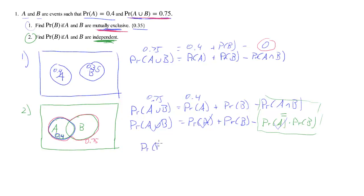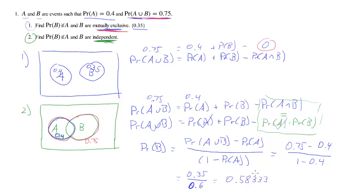And you can of course do that yourself. I'll just give the solution here. The probability of B is equal to the probability of A or B minus the probability of A divided by 1 minus the probability of A. And if you plug in the numbers we have, we'll get 0.75 minus 0.4 divided by 1 minus 0.4. So that's 0.35 divided by 0.6, which is 0.583 period. That's the solution.